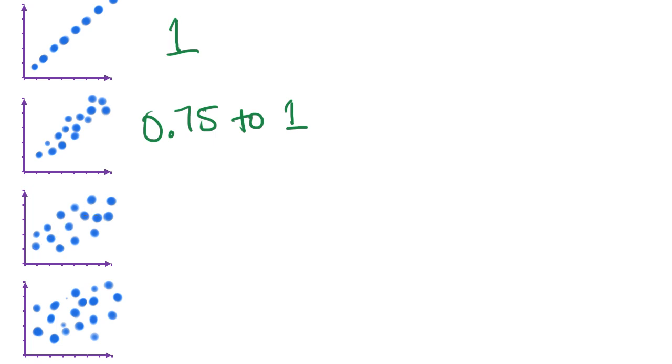Moving along, when you had a moderate relationship, that would be somewhere between 0.5 and 0.75. The weak relationship down here is going to be between 0.25 and 0.5. So 1 is perfect, all in a line. 0.75 to 1 is very, very strong. 0.5 to 0.75, moderate. 0.25 to 0.5 is weak.